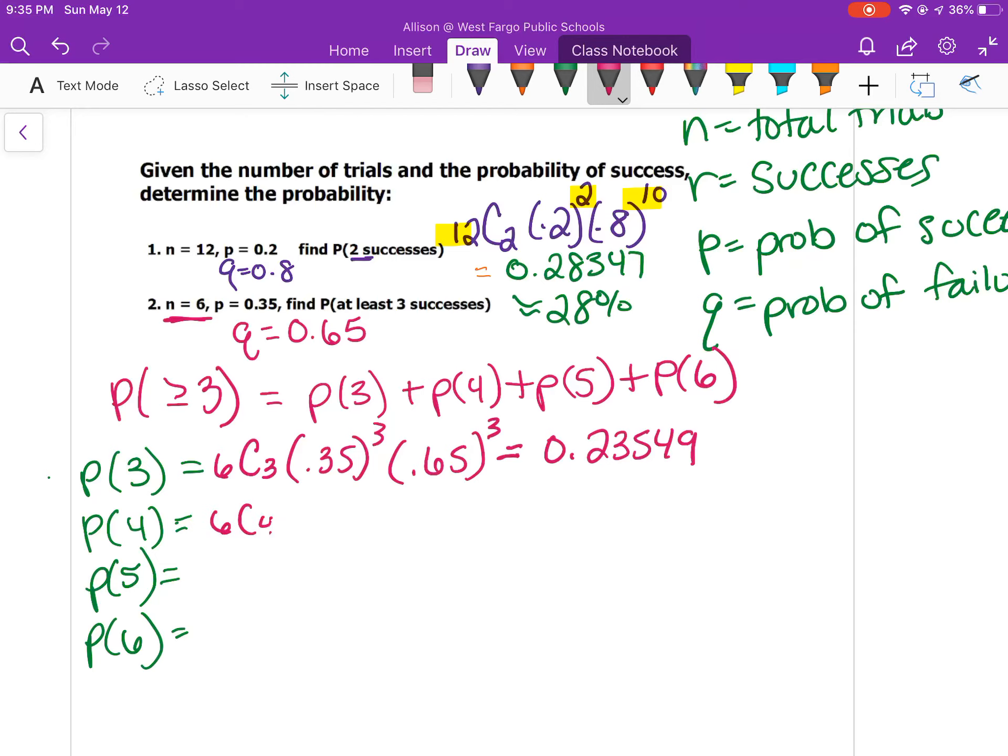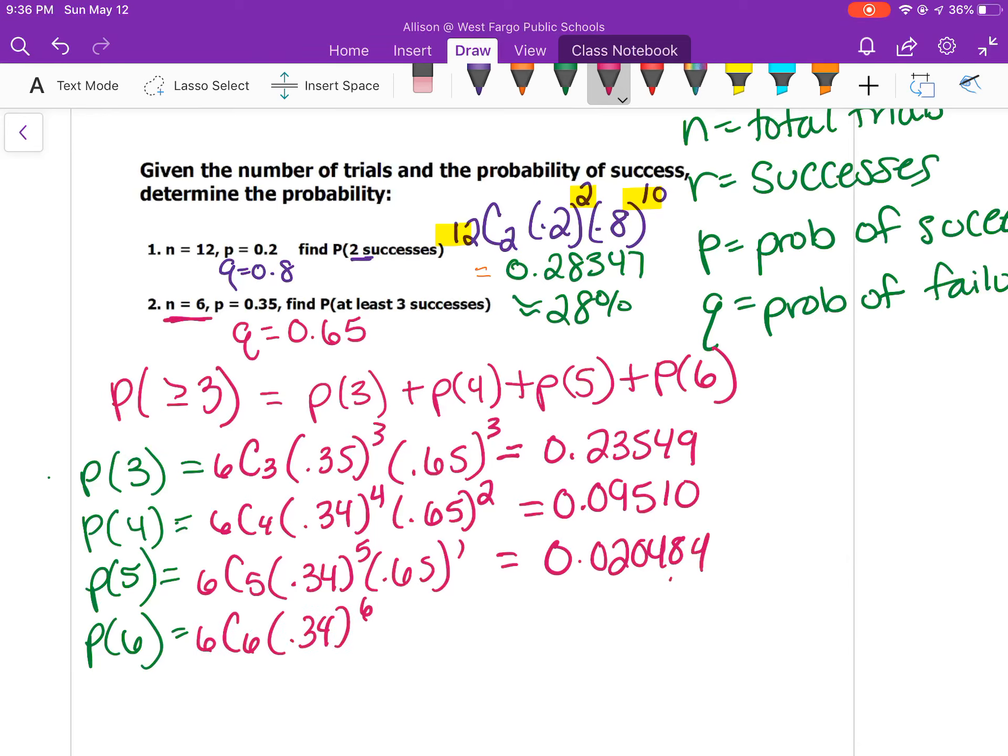Then I have 6 choose 4, so 0.35 to the fourth power. I want 4 to be successful. If 4 are successful, then 2 are unsuccessful, so 0.65 to the second. I got 0.09510. 6 choose 5, so 0.35 to the fifth, 0.65 to the first. I got 0.020484. Then 6 choose 6, all 6 successful, which means no failure, so to the 0 power on the end. I got 0.01838.